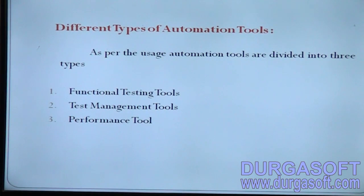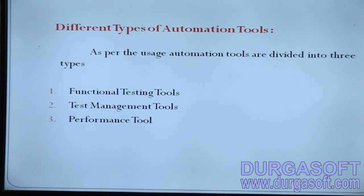As per usage, automation tools are divided into three types: functional testing tools, test management tools, and performance tools.